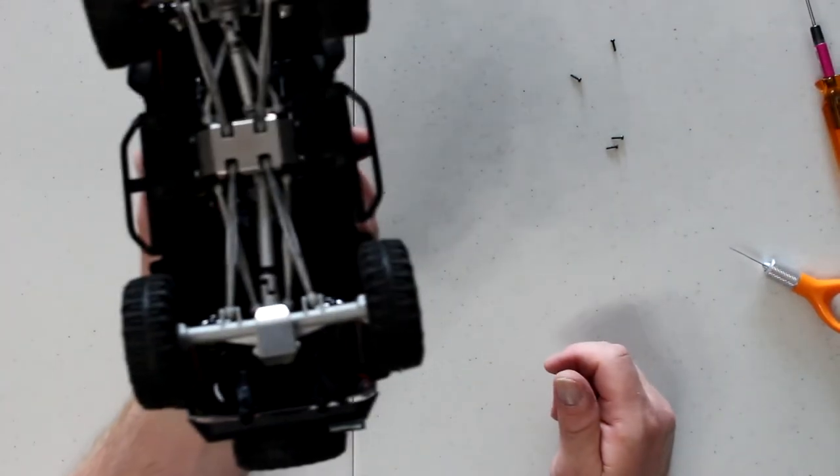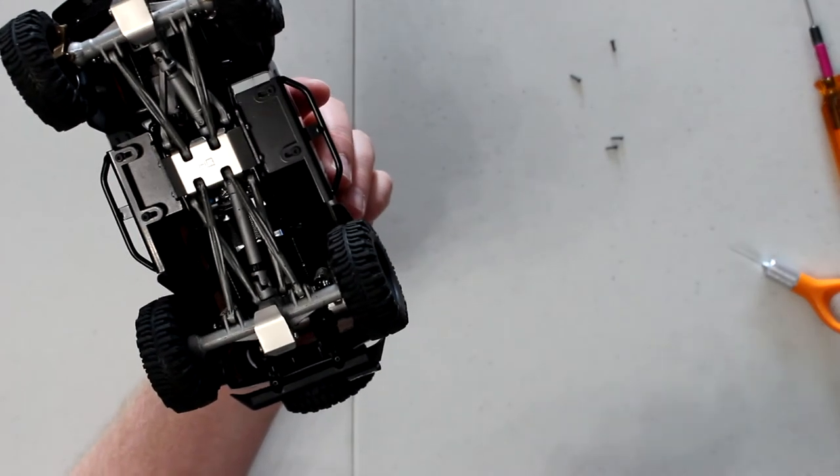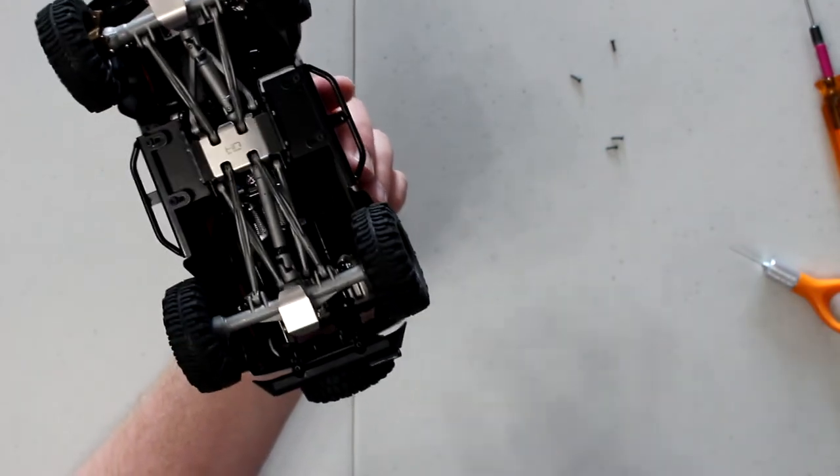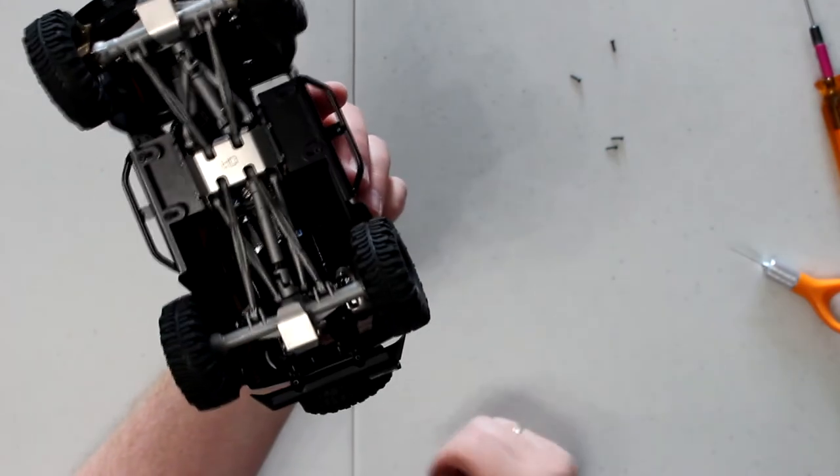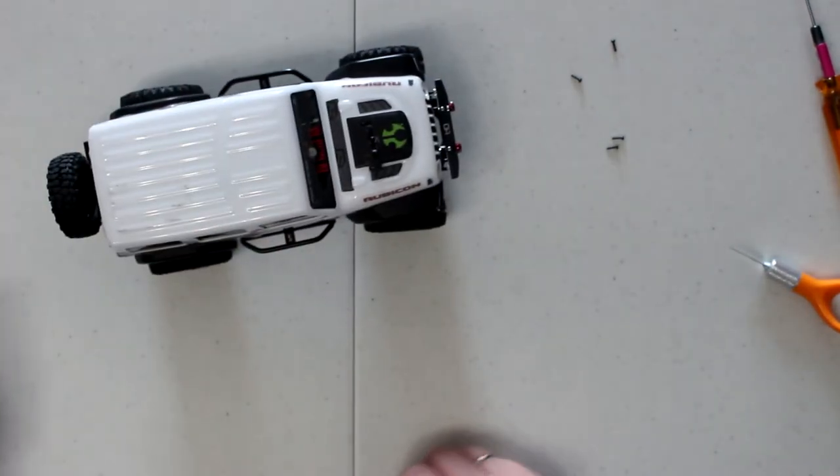And there you go. You have the Hot Racing skid plate or stainless steel center belly skid plate, they call it. Now, this will protect your center drive. And there you go.